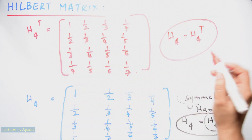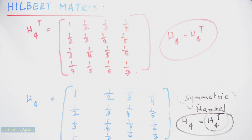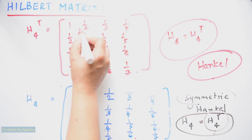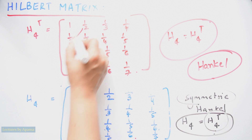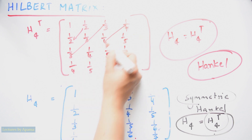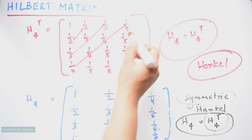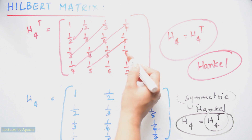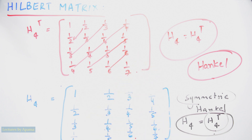Therefore, a Hilbert matrix will always be a symmetric matrix. Hilbert matrix is also a Hankel matrix. Hankel matrix means that the skew diagonal elements will be the same. Here 1/2 and 1/2 is the same. Considering skew diagonal 1/3, all these elements are the same. The next skew diagonal 1/4 is the same. The next skew diagonal 1/5 is the same. Likewise, 1/6 is the same. So Hilbert matrix will be a symmetric matrix as well as a Hankel matrix.